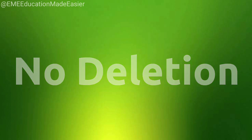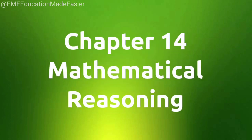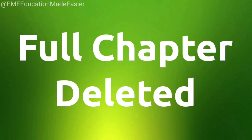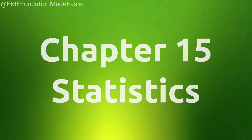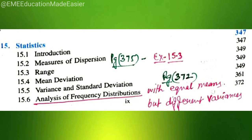From chapter number 14, mathematical reasoning, full chapter has been deleted. Now, coming to chapter number 15, statistics, analysis of frequency distribution with equal means but different variance on page 372 has been deleted. Related to this, we have exercise 15.3 on page 375. This has also been deleted.